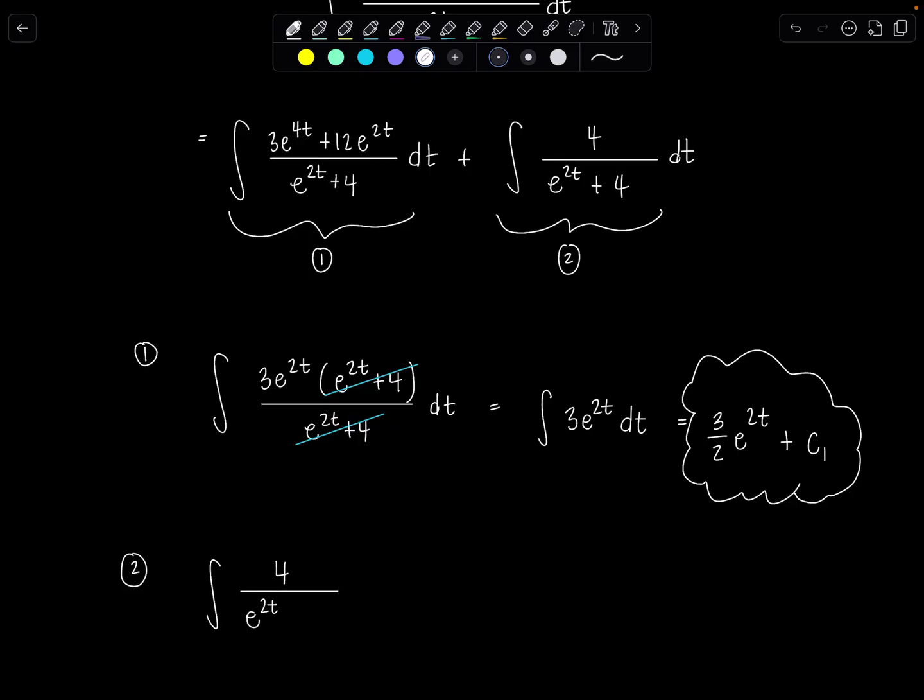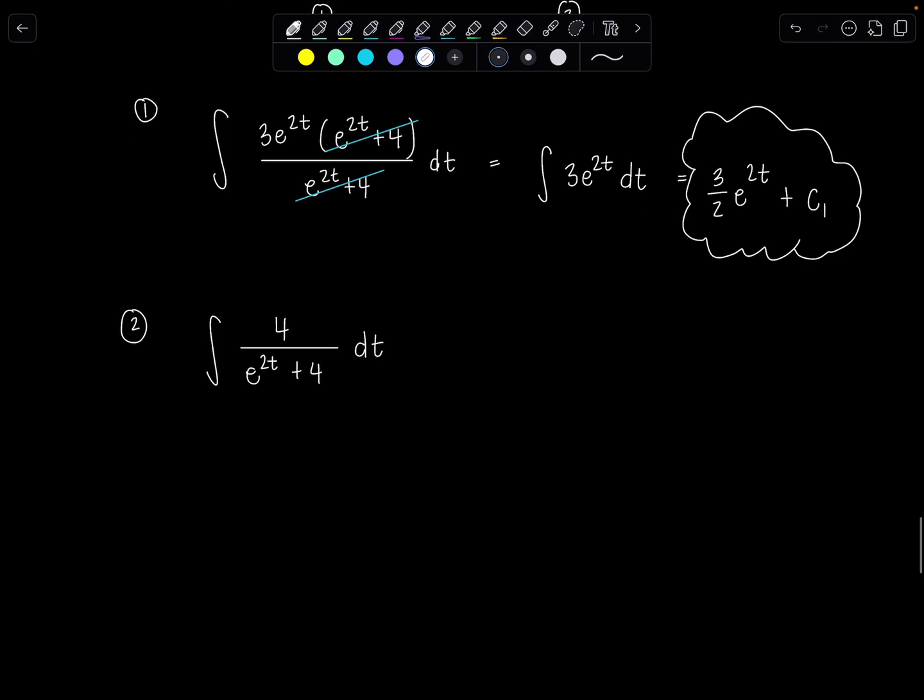Okay, 4 over e to the 2t plus 4 dt. Okay, what to do from here? Well, you know, a lot of the time when you see e to the 2t, it's helpful to think of it as e to the t squared. And then I'm thinking, all right, we probably need to make some sort of substitution. So let me go ahead and let's let u equal e to the t, then du would be e to the t dt. And then before you have a panic attack, don't worry. I know there's no e to the t up here. We're just going to rearrange this. So I have 1 over e to the t du equals dt. But remember, this e to the t is u.